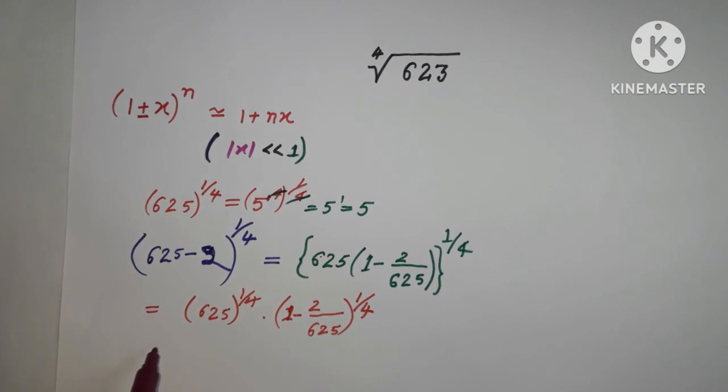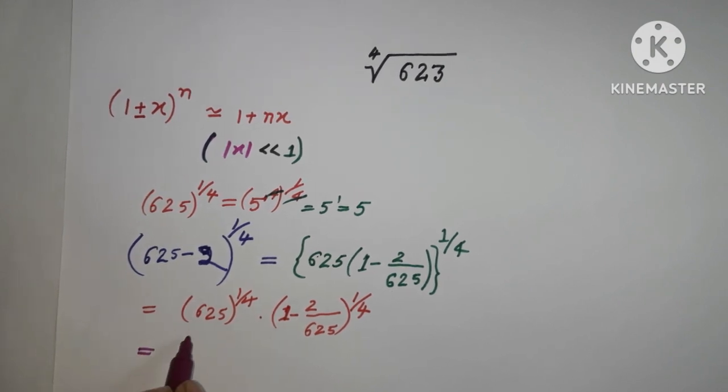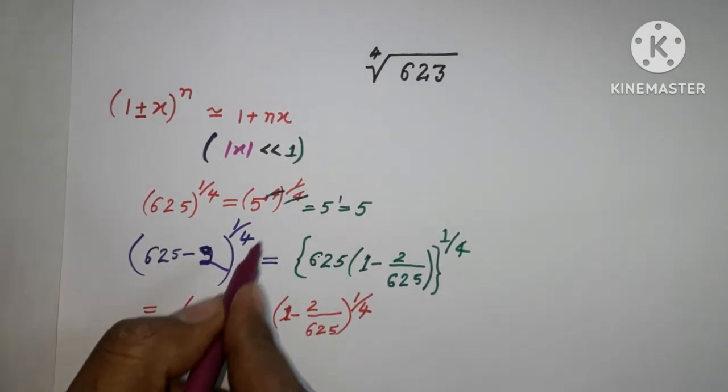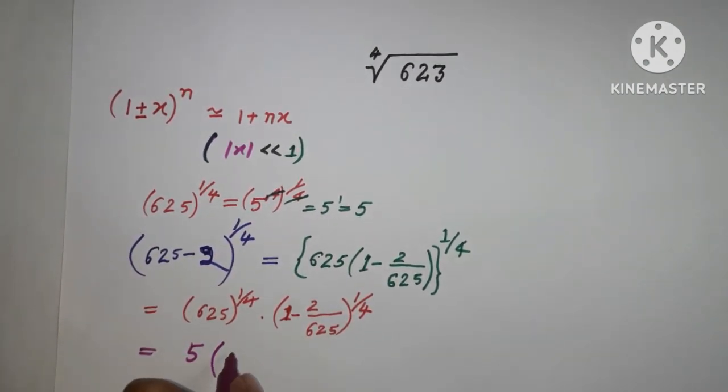So 625 to the power 1/4 is 5, as already solved. Now we have 5 times (1 minus...